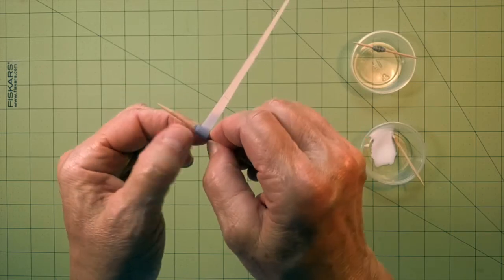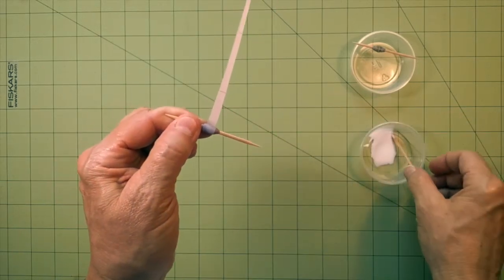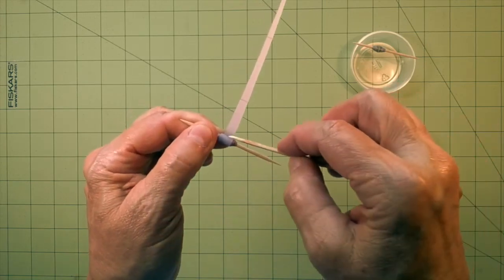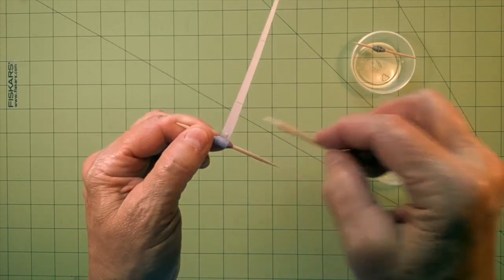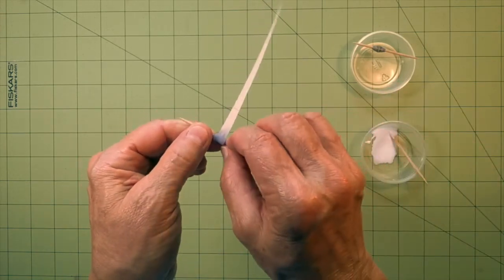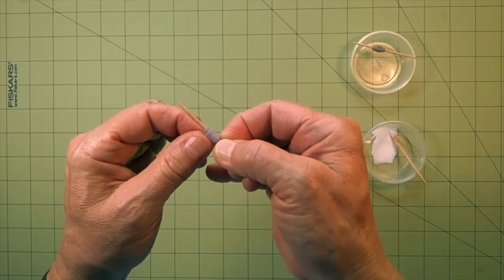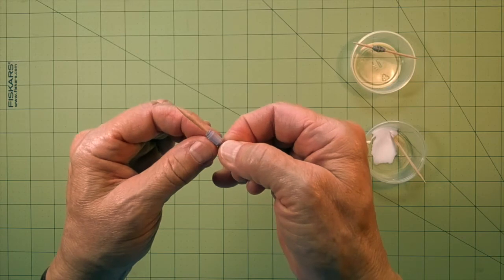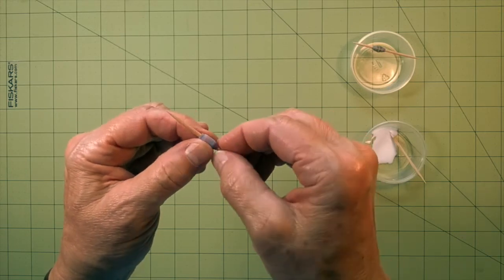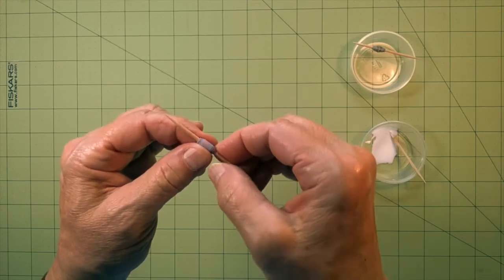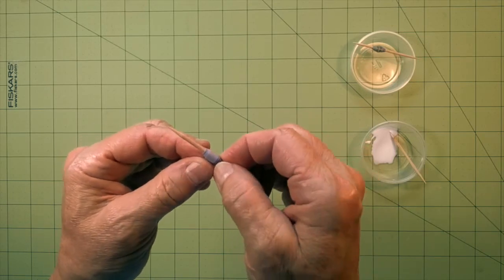If it's way off, if you find that you're not centered at all, you can unroll it a little bit. A little more glue here. If any glue happens to leak out, just wipe it away.